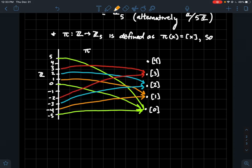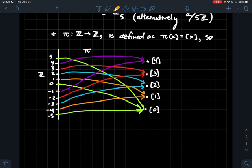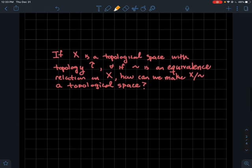Negative two, three, and eight all get sent to [3]. Finally, negative one, four, nine get sent to [4]. The key idea is that every integer gets sent to one of these five boxes, and you can visualize that the map is definitely onto.